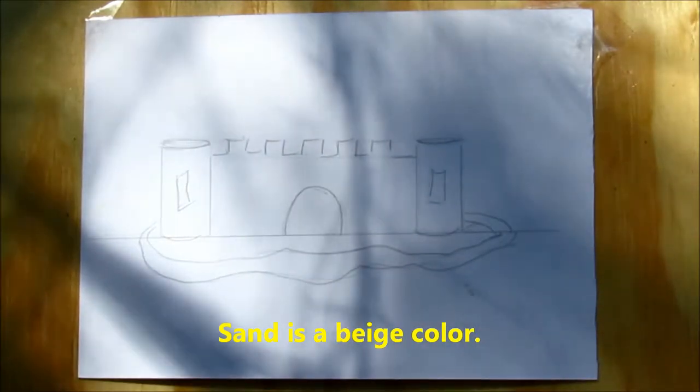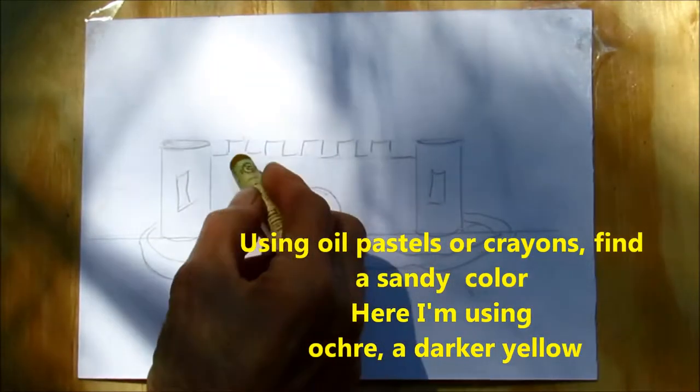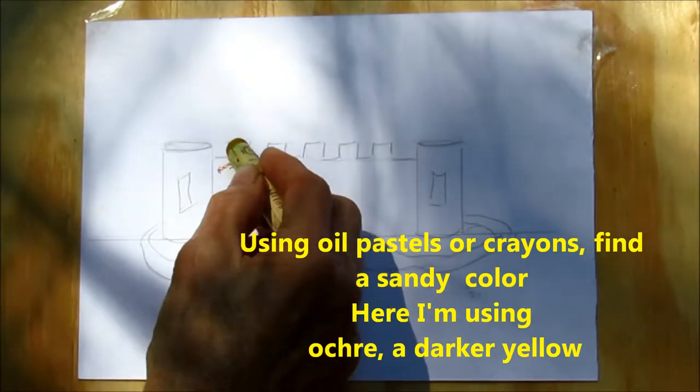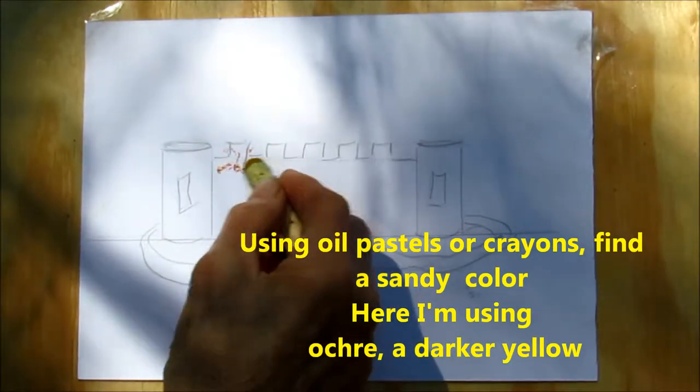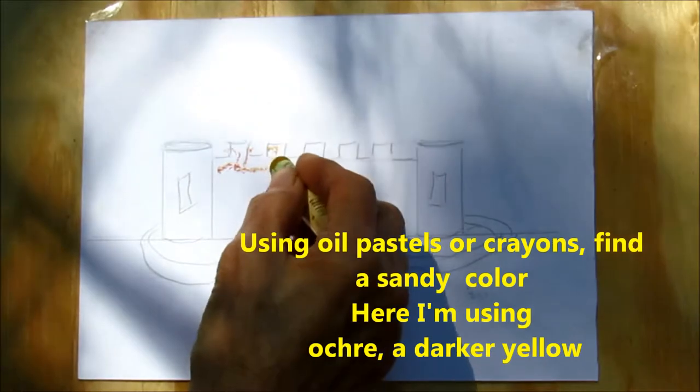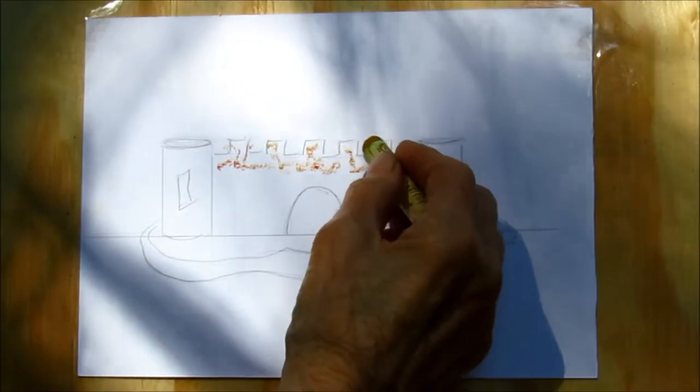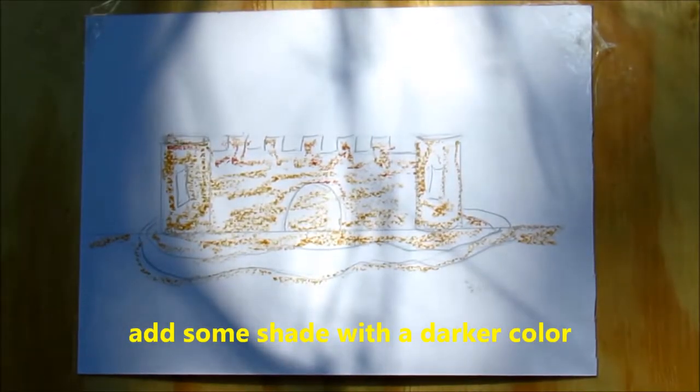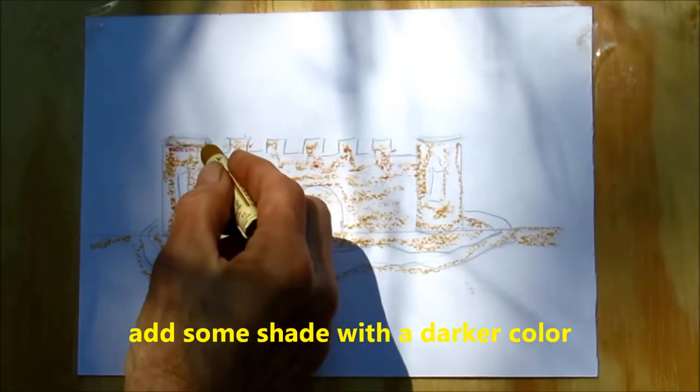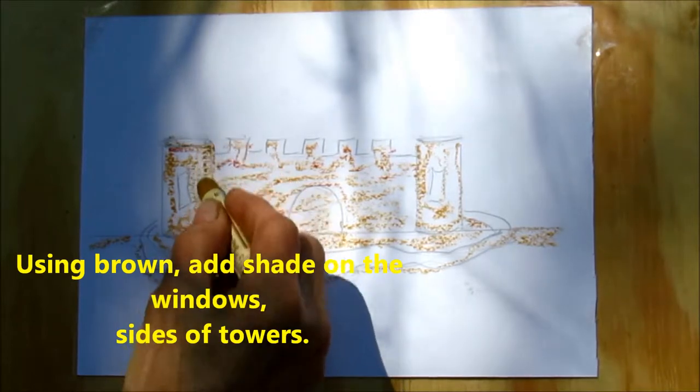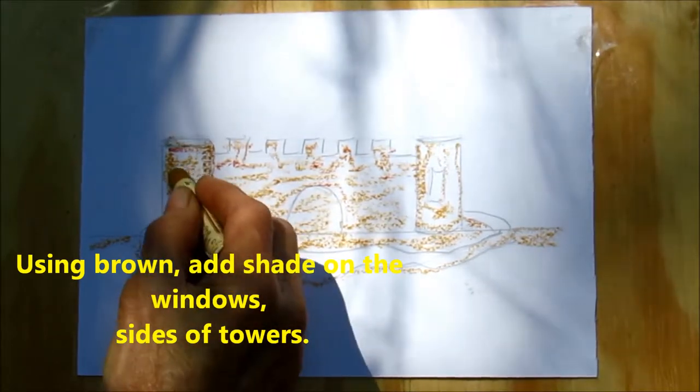Now sand is like a beige color. So we're going to start with a deeper color of yellow, which is an ochre. This is an ochre. We're going to put a little shade in. So we're going to do a darker ochre, or a brown, where the shade is.